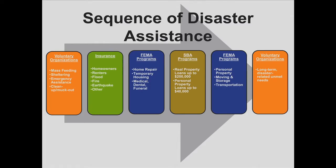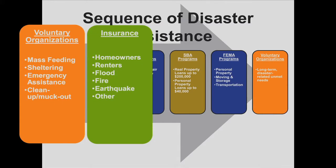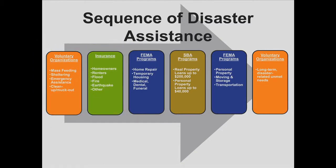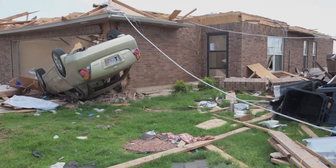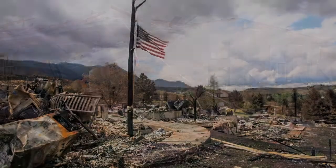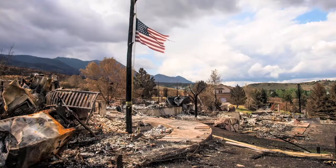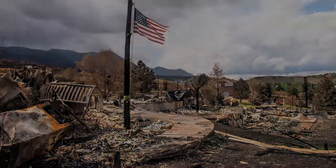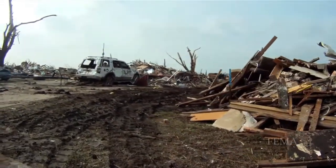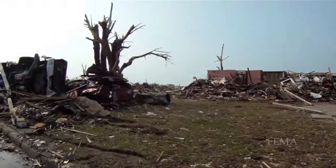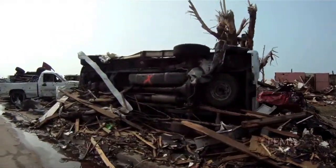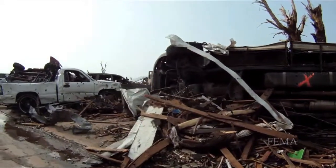As we look at the sequence of disaster assistance graphic, note that the first assistance a household receives may be from voluntary organizations and insurance. It may take weeks to learn if the area is eligible for federal assistance. The Department of Public Safety Division of Homeland Security and Emergency Management works hand-in-hand to quickly assess damages. If the event is determined to be beyond the capability of state and local governments to respond and recover, they assist the governor in applying for federal assistance. Survivors play a key role in this — as soon as they possibly can, they should report to their local emergency management official.